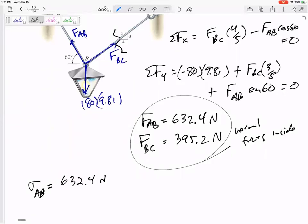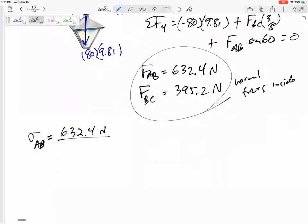632.4 divided by area. Right, stress is force over area. So the area of bar AB, pi by 4, 10 millimeters squared. And I didn't kind of mention this, but I've got newtons on top, I've got millimeters squared on bottom. That is MPa. That's kind of why I like MPa, because a lot of times we have newtons, a lot of times we have millimeters squared. So this would be 8.05 MPa is the stress inside section AB.